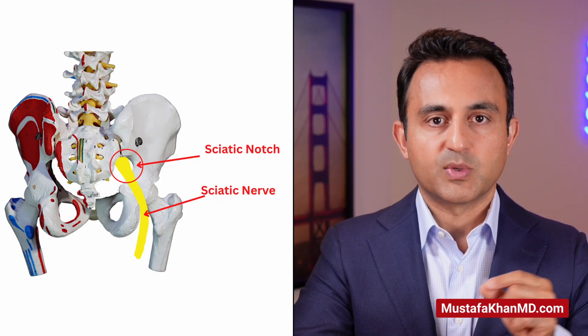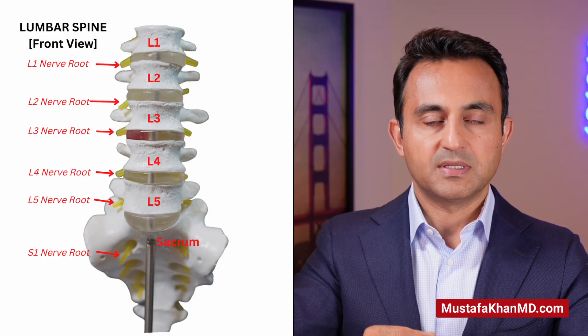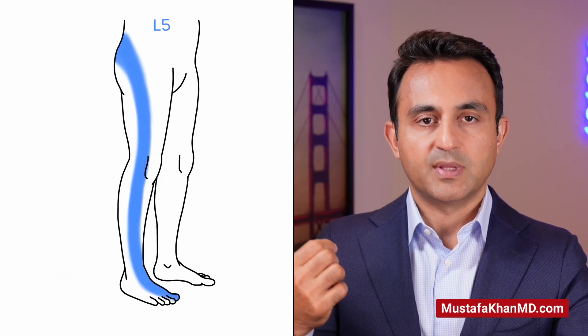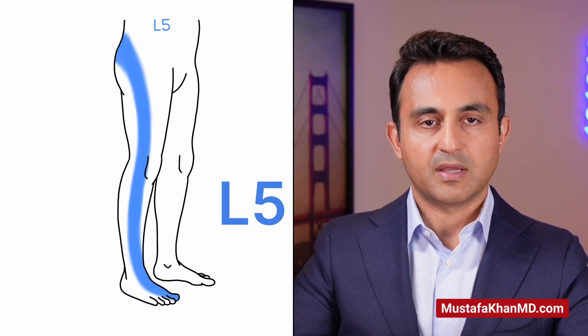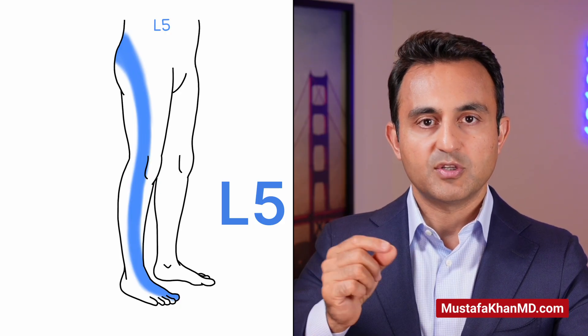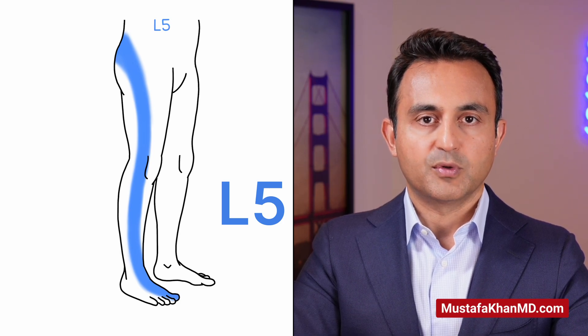In most cases of lumbar radiculopathy, you can get a pretty good idea of which nerve is affected based on the location of the patient's pain. Let's start with the L5 nerve, which is the most commonly affected nerve. The L5 nerve comes out between the L5 and S1 vertebrae, then goes deep into the pelvis and exits through the sciatic notch in the buttock. From the buttock, it goes to the outside of the thigh, continues beyond the knee into the outside of the shin, and goes into the top of the foot and classically into the big toe. If a patient is having pain, numbness, or tingling at this location, you can be pretty confident that this is an L5 nerve root problem.